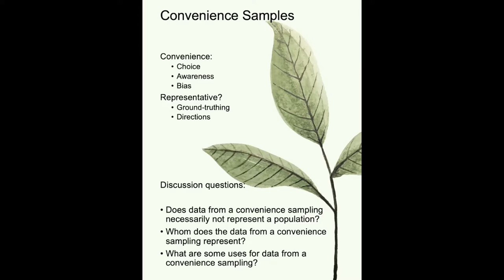The third thing to keep in mind is that convenient samples are generally considered to have some bias. Bias means there is some influence making the sample not representative, or including more people of a certain nature than others. For convenient sampling, that bias is the kind of people who would come and take a survey.